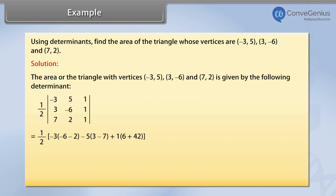Equals 1/2 times: minus 3 into (minus 6 minus 2), minus 5 into (3 minus 7), plus 1 into (6 plus 42). Equals 1/2 times (24 plus 20 plus 48). Equals 46.